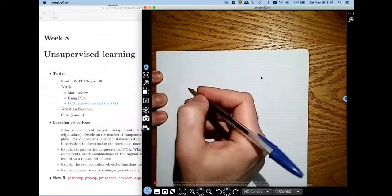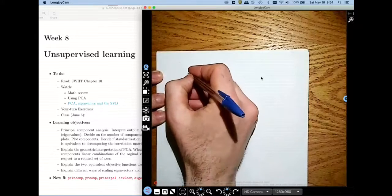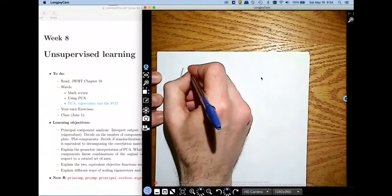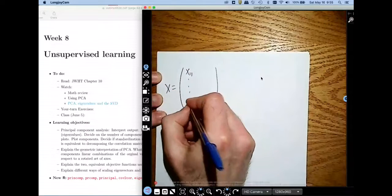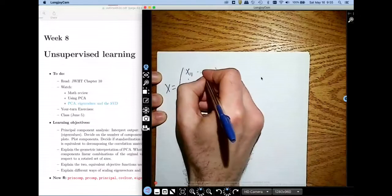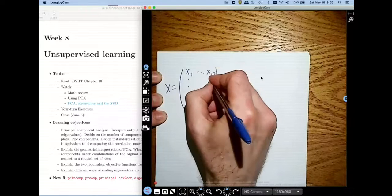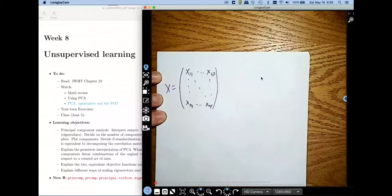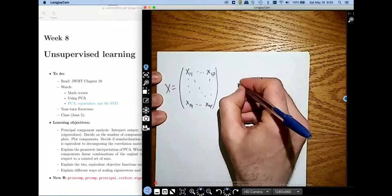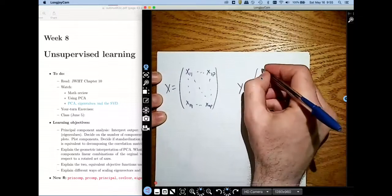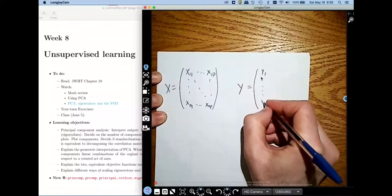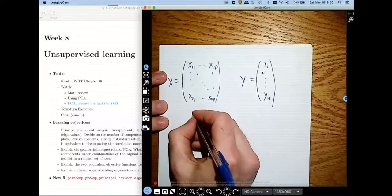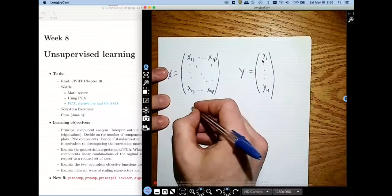So what we've been doing so far is we've been studying relationships like this. I have an X matrix with p variables in this X matrix, and I also have a y vector, y1 through ym.